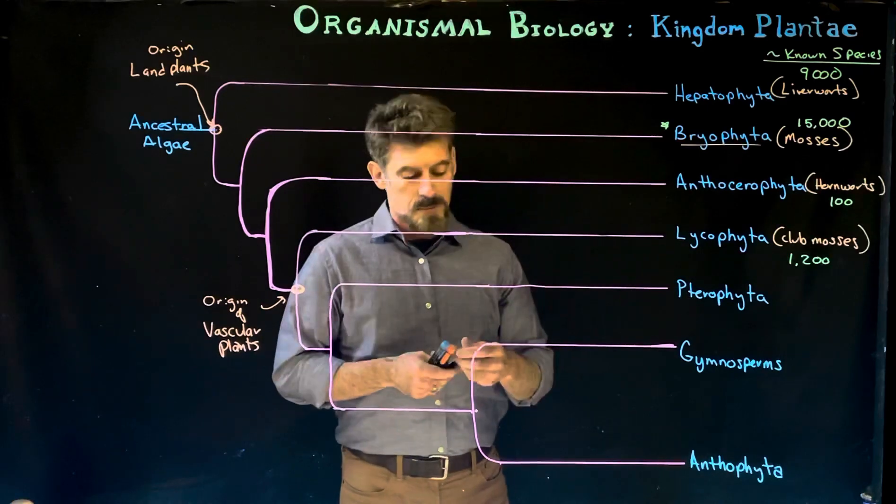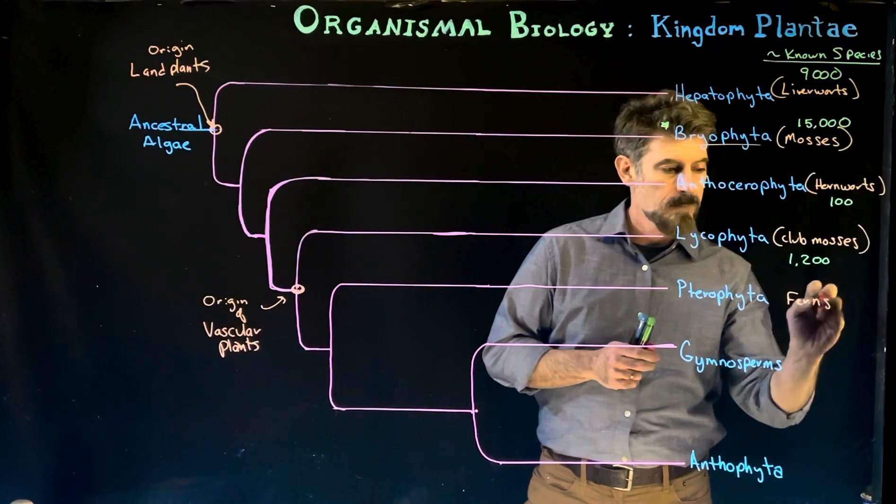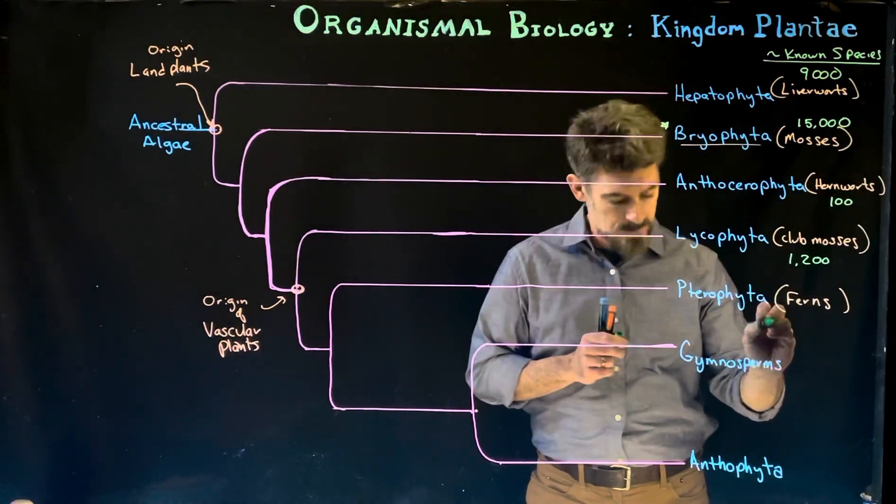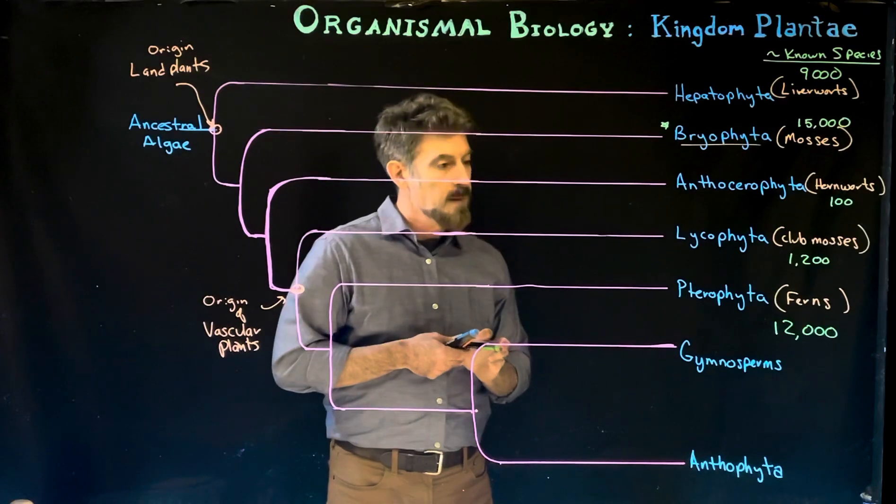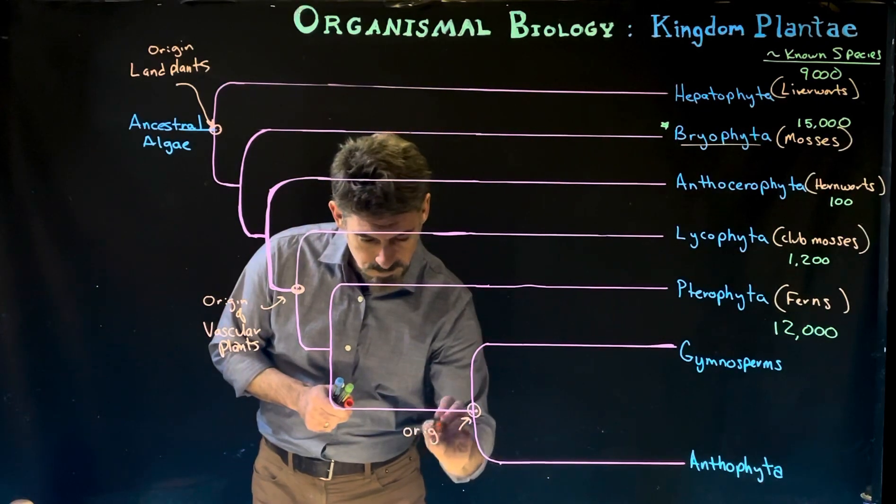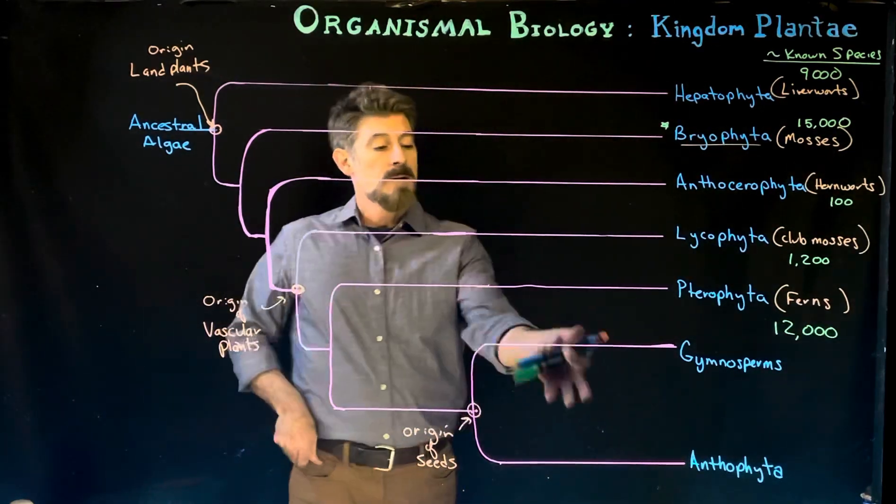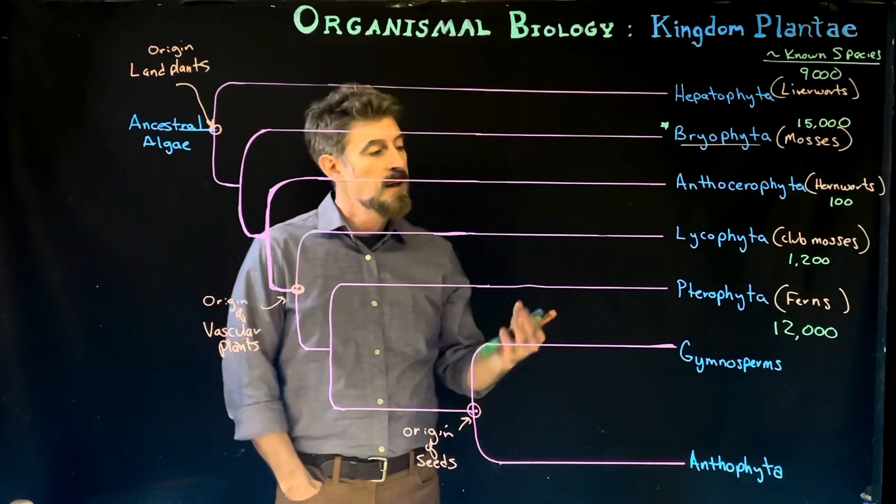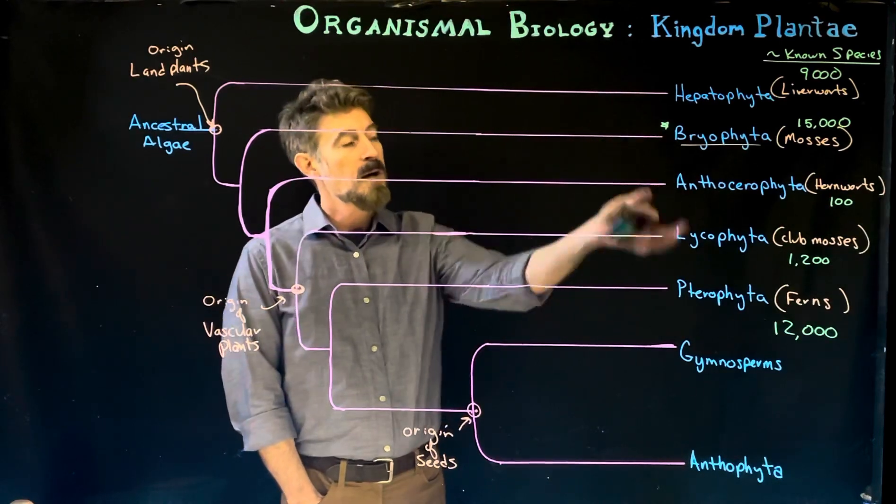Now we have the spore forming Pterophyta, which are the ferns. The Pterophyta is a much bigger group with about 12,000 species. Then we'll get into the origin of seeds, which also means that these are plants that produce seeds and these other plants do not produce seeds. Like I just mentioned, the ferns are spore producing.